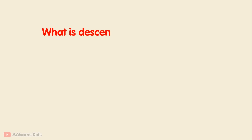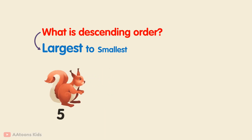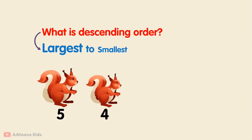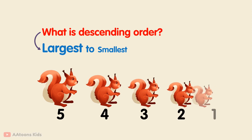What is descending order? In descending order, numbers or items are arranged from the largest value to the smallest value, like 5, 4, 3, 2, 1. In descending order, the value is arranged from largest to smallest.